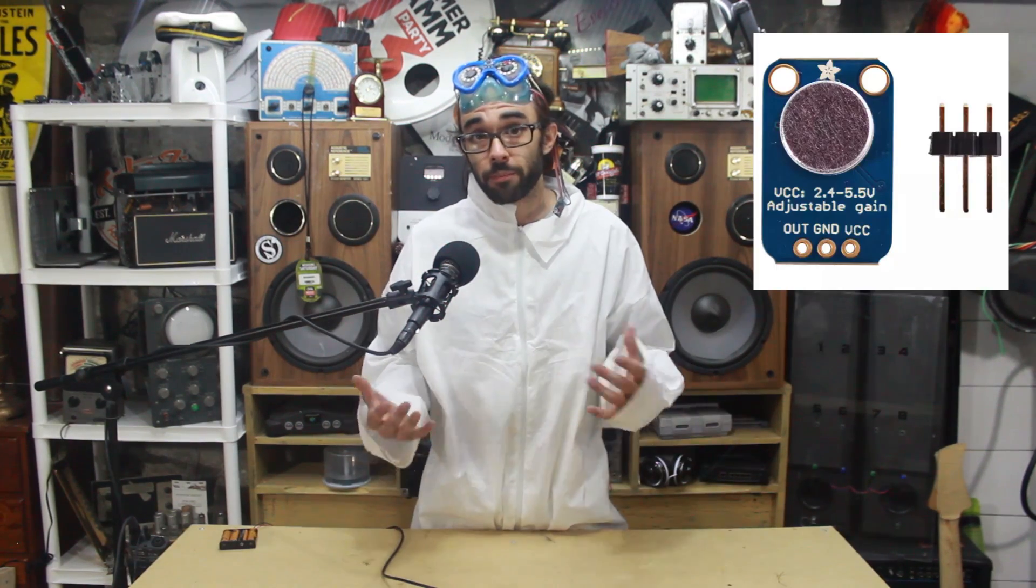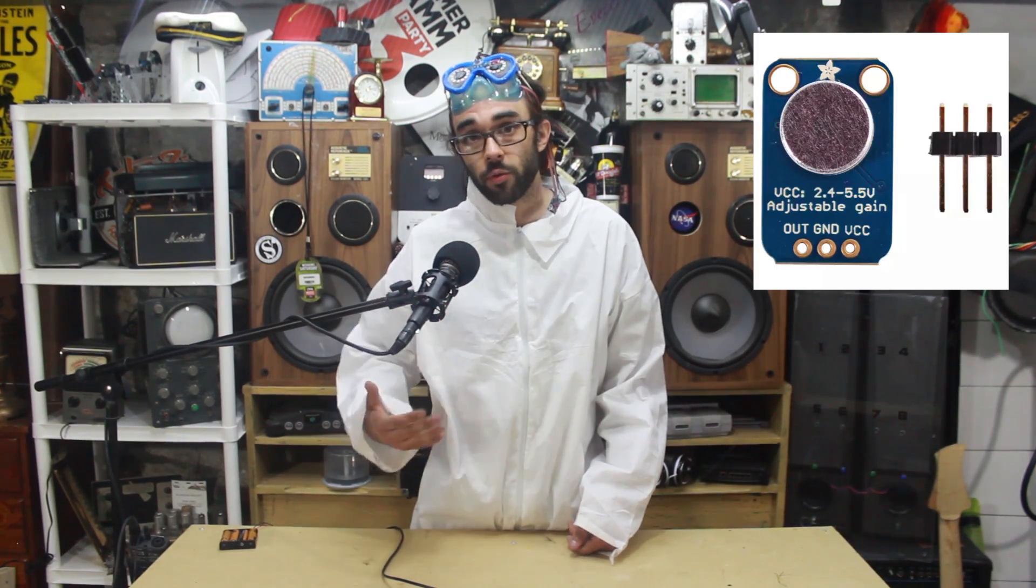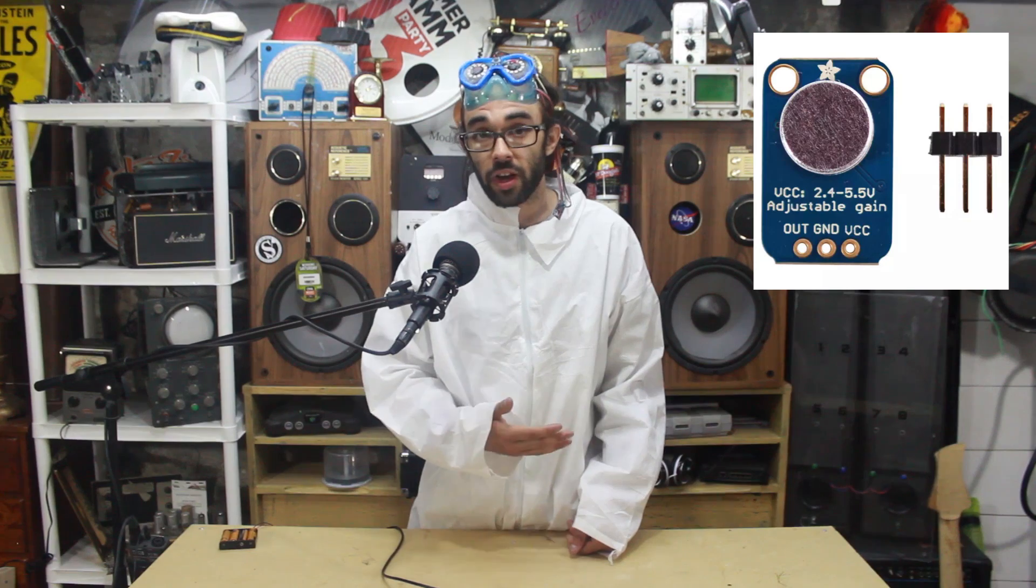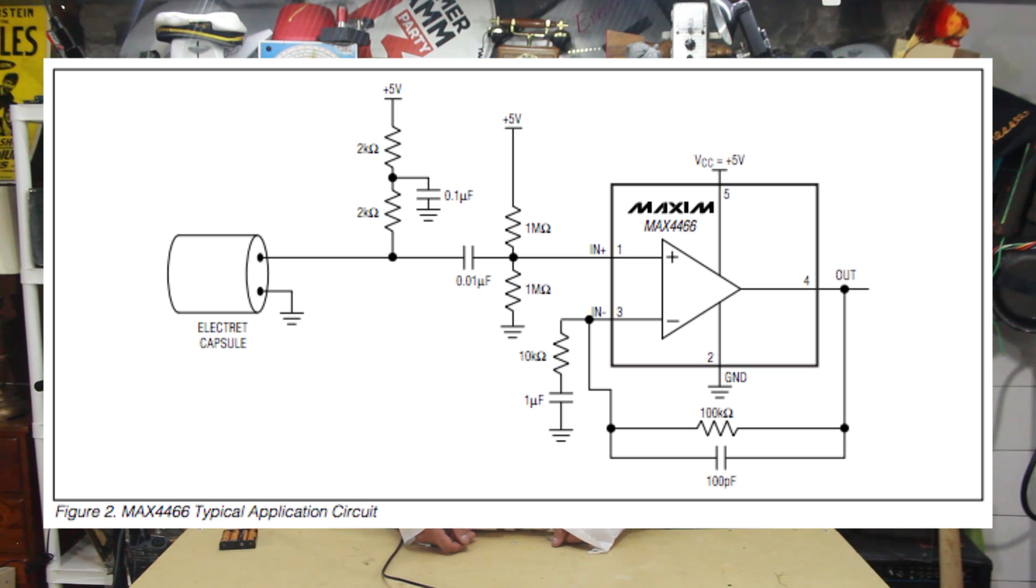The mic amp breakout utilizes the MAX4466 to amplify the sound detected by the electric microphone. The MAX4466 is a handy amplifier for applications like this. It's optimized according to the needs of a microphone preamp. Here's the typical operating circuit for a MAX4466. This breakout board incorporates a trim pot to make the gain adjustable.